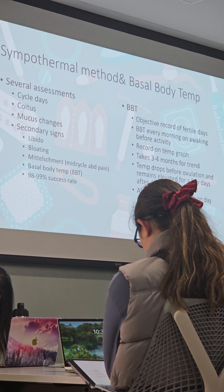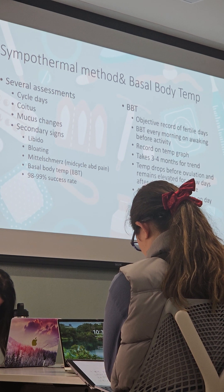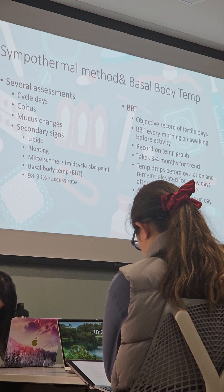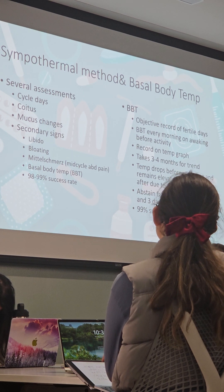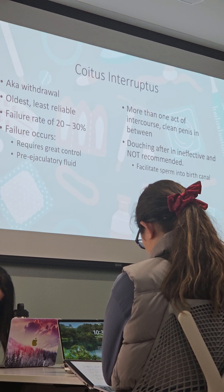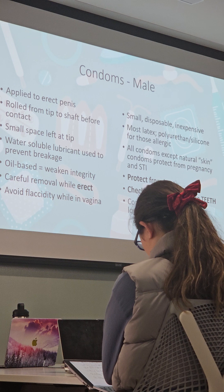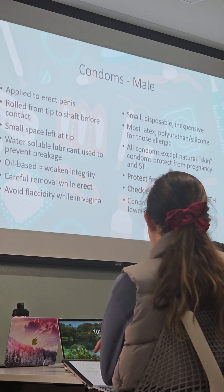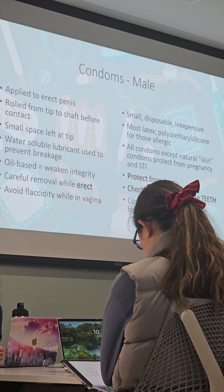Definitely know about basal body temperature — how to teach somebody what it is and what to do. Know the secondary signs of ovulation: libido changes, bloating, mid-cycle abdominal pain, and basal body temperature. Basic teaching like not to douche is really important. For ATI and NCLEX, know safe condom use: protect from heat, don't use teeth, check expiration, remove while erect.